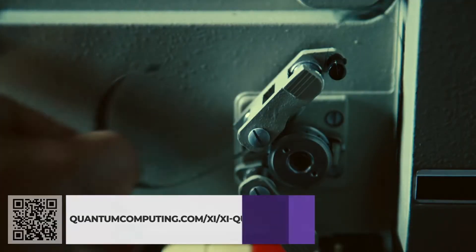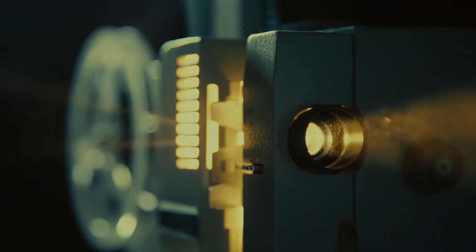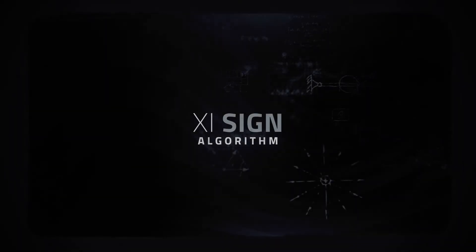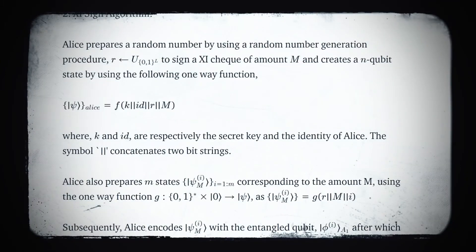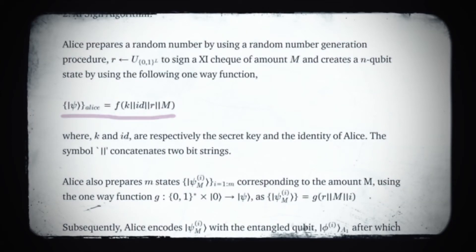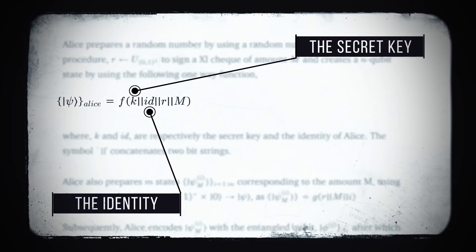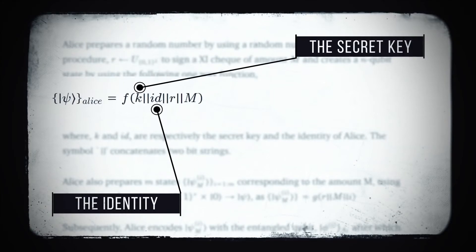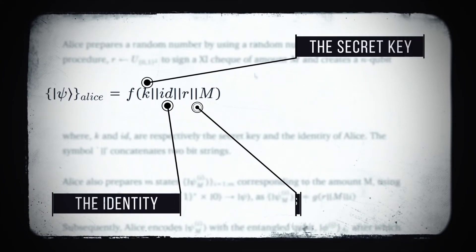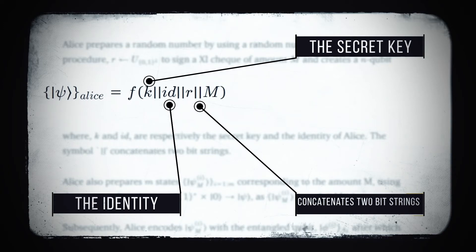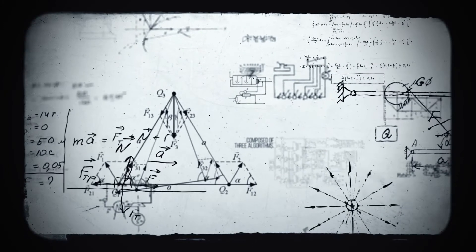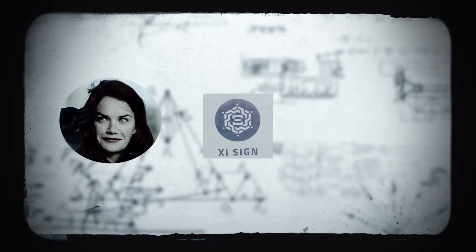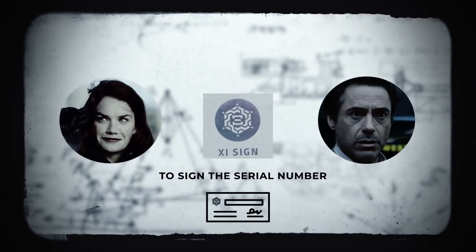Next, algorithm number 2. Alice prepares a random number to sign a XI check of amount M, and creates an N qubit state by using the following one-way function, where K and ID are respectively the secret key and the identity of Alice. And this symbol concatenates two-bit strings. After all the complex calculations, Alice uses the XI sign algorithm to sign the serial number and generates a XI quantum check for Bob to redeem.